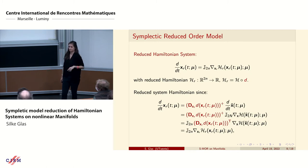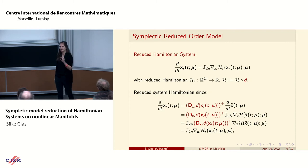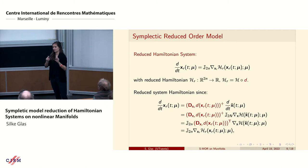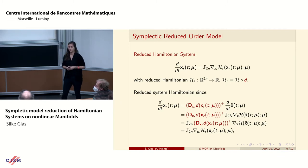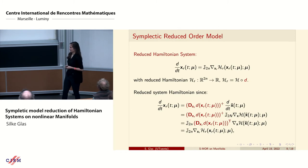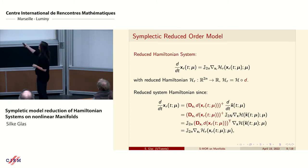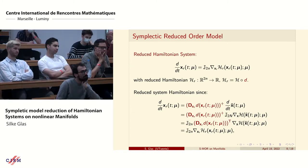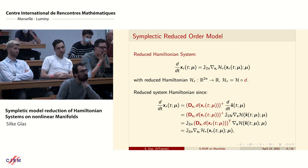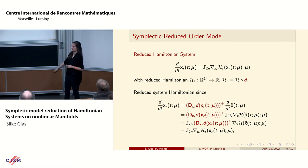We use the property that the Jacobian is a symplectic matrix. Applying the chain rule again, we arrive at our reduced model. There are some nice preservation results — we look at energy and stability preservation next.